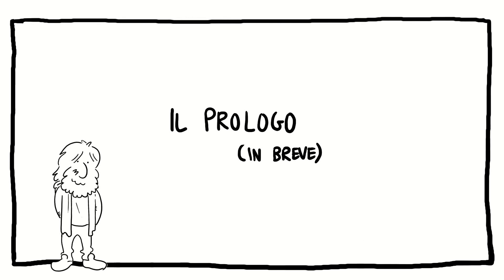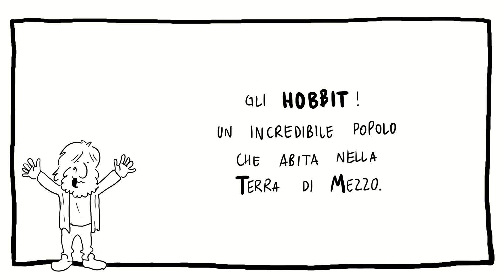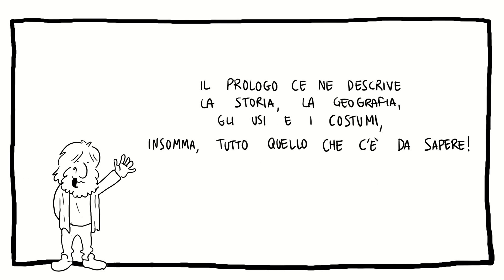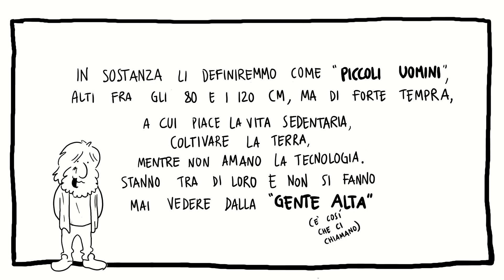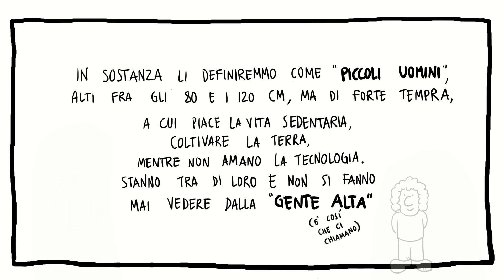Il prologo in breve: gli Hobbit, un incredibile popolo che abita nella Terra di Mezzo. Il prologo ce ne descrive la storia, la geografia, gli usi, i costumi - insomma tutto quello che c'è da sapere. In sostanza li definiremmo come piccoli uomini, alti fra gli 80 e 120 centimetri, ma di forte tempra, a cui piace la vita sedentaria, coltivare la terra, mentre non amano la tecnologia. Stanno tra di loro e non si fanno mai vedere dalla gente alta, come ci chiamano.